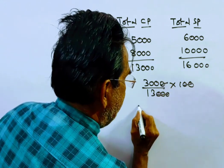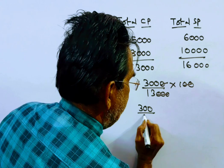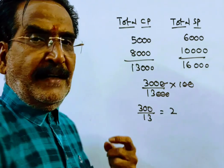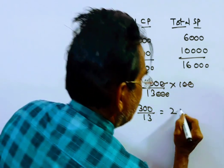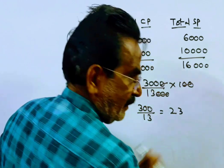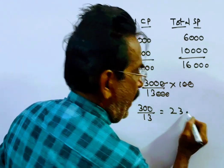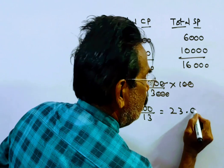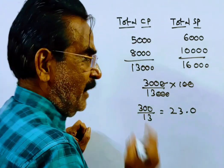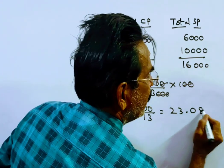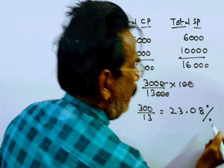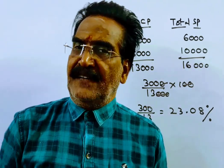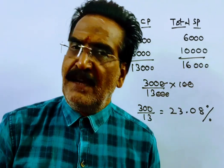Three zeros get cancelled, giving 300 by 13. Dividing: 13 twos are 26, 40 minus 39 gives 1 remaining, then 10 — so approximately 23.08 percent. Thanks, have a nice day.